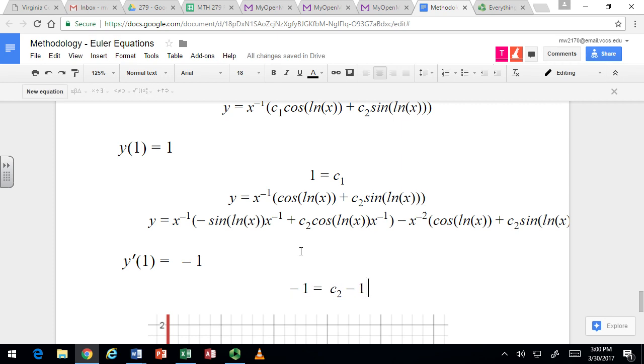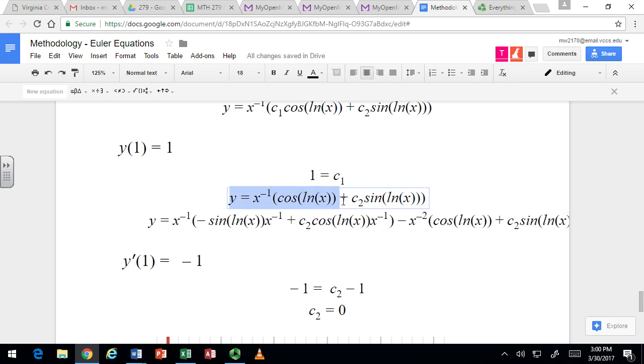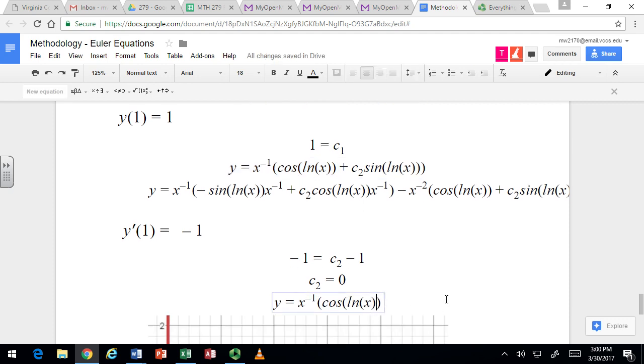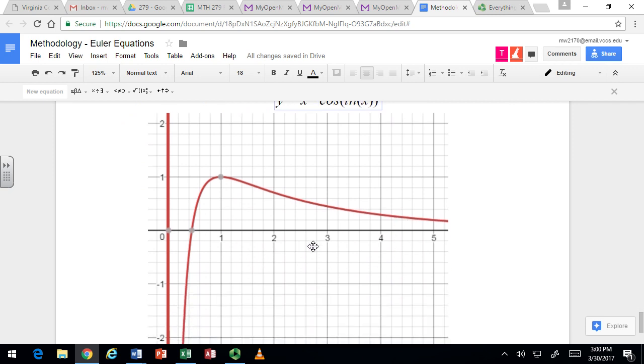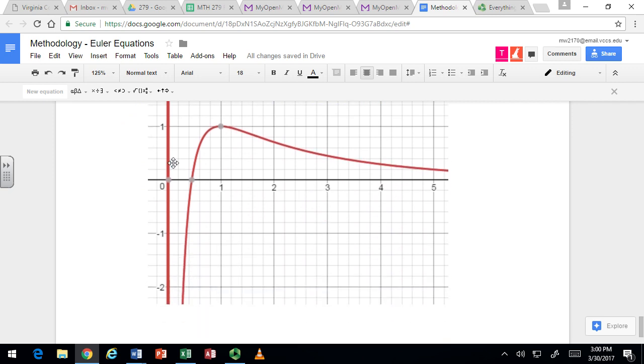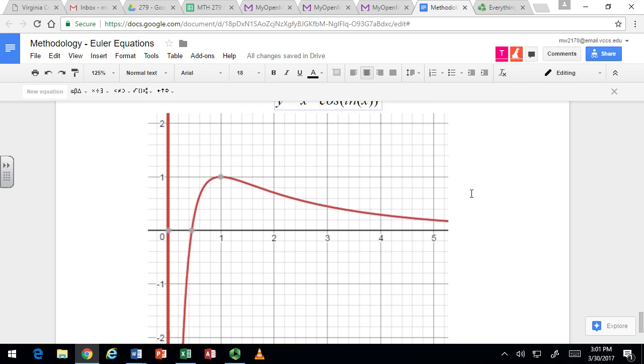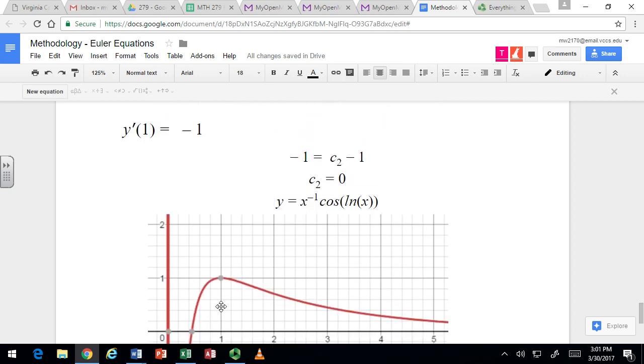Alright. So it ends up turning into this, which tells you c2 is 0. So then you would just go back to your formula and you actually just lop off that second part. In this case, you wouldn't need that - c2 is gone. So that's a graph of the solution showing how it is asymptotic around 0, but can be used for other values nearby.